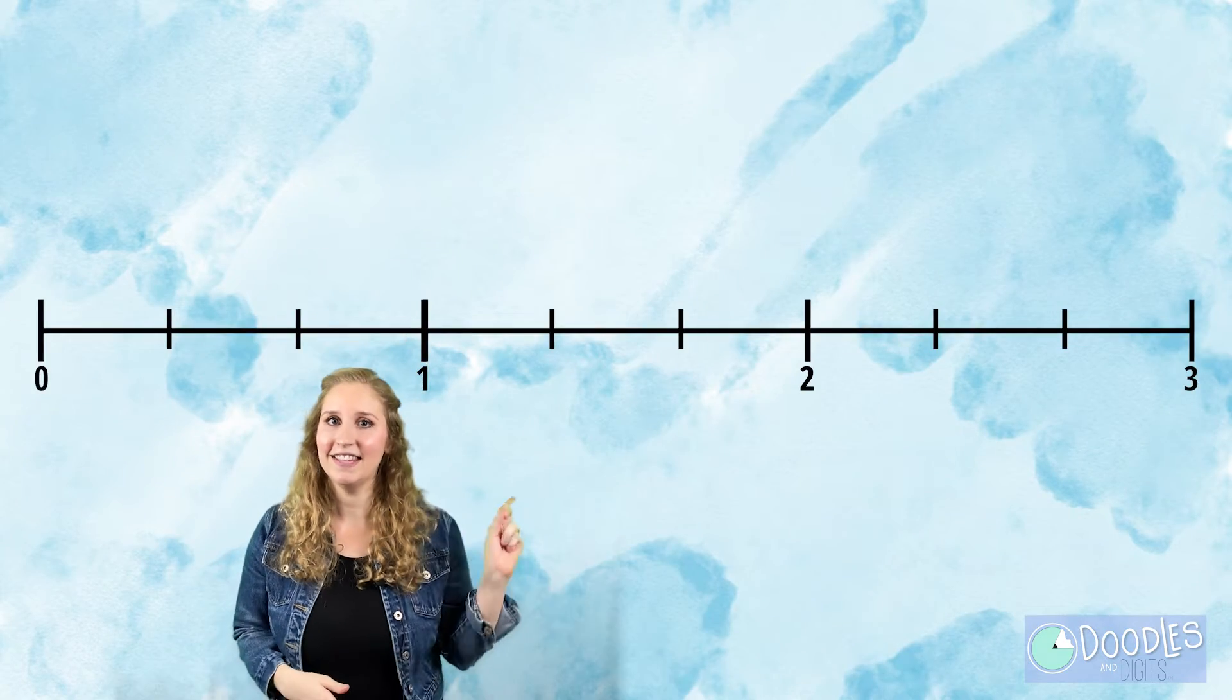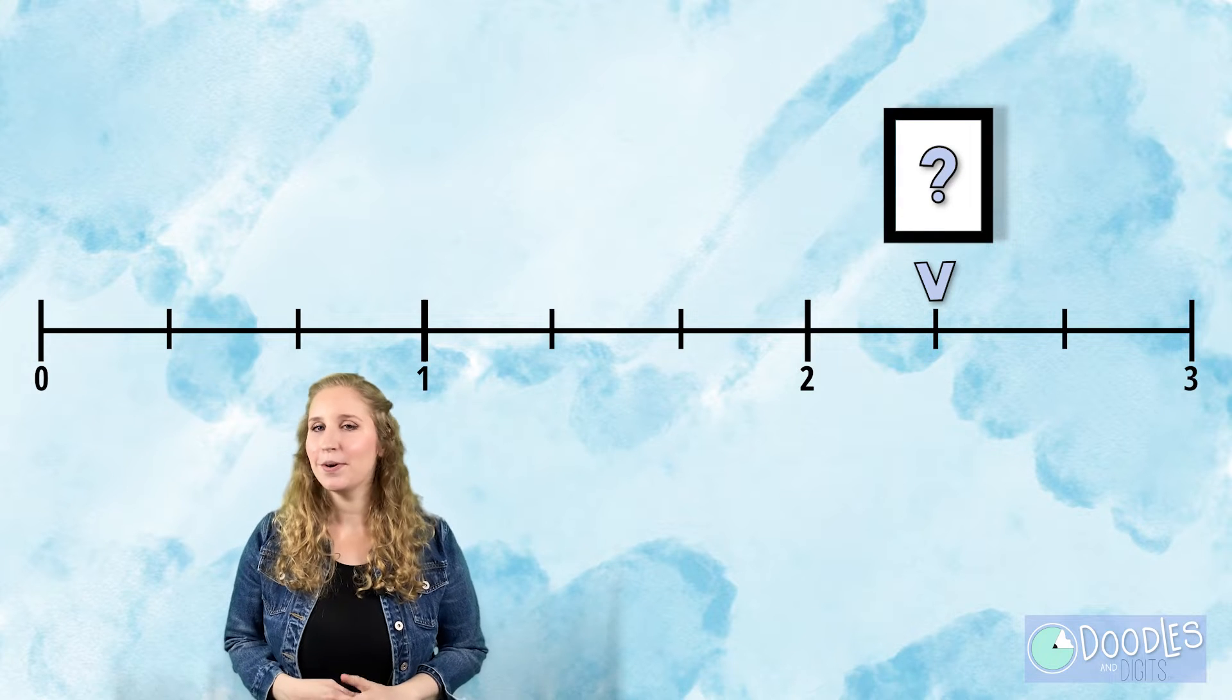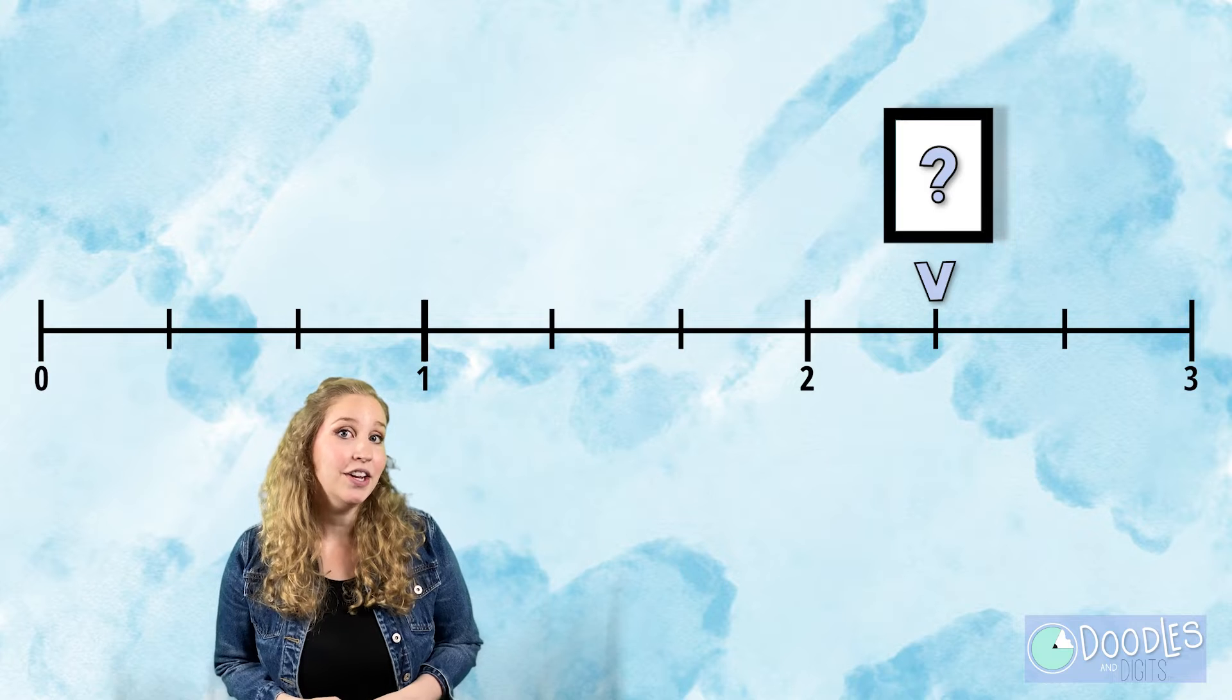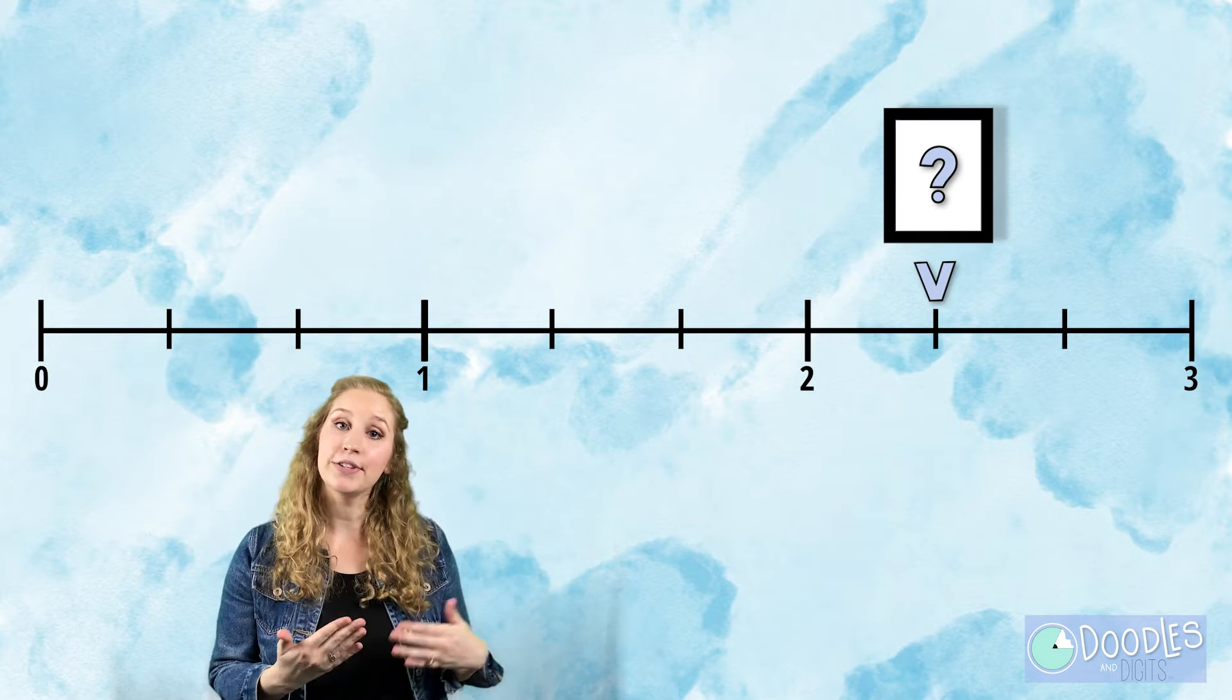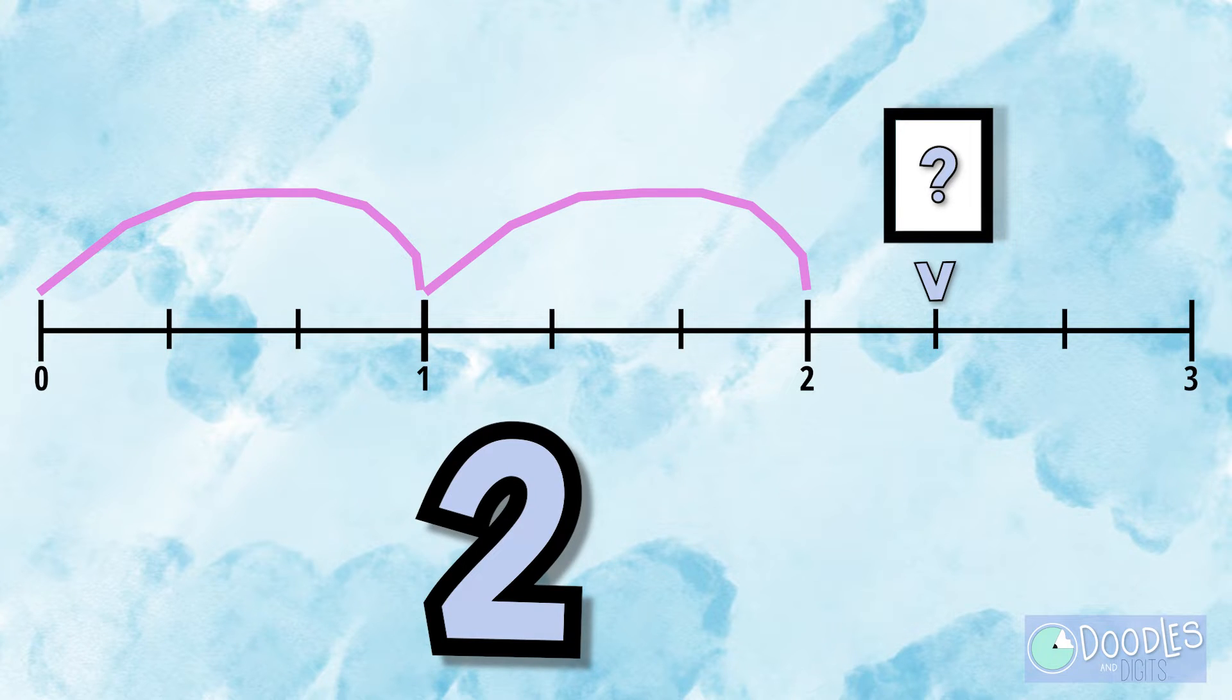Not only can you show mixed numbers with models, you can also use a number line. Let's try one now. Alright, this number line right here is showing a mixed number. What mixed number do you think it's showing? You might notice on this number line you have wholes and you also have fractions. Let's first see how many whole numbers we're jumping. We're jumping two whole numbers so our whole number is going to be two.